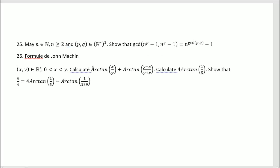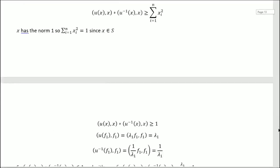So it's this. We have two sets of positive and non-zero reals, x and y, with x inferior to y. So we want to calculate arctangent of x divided by y, plus arctangent of y minus x over y plus x. Then we want to calculate four arctangents of 1 over 5, and we want to show this. So let's take a look at number 26.